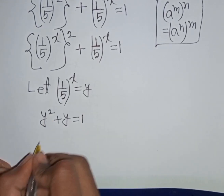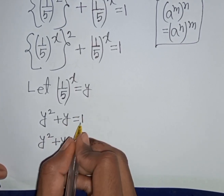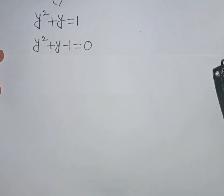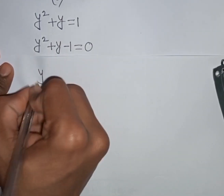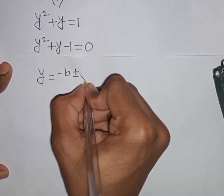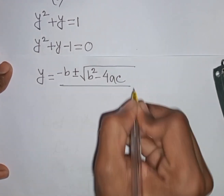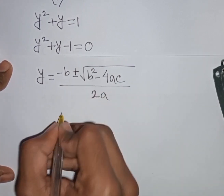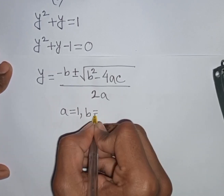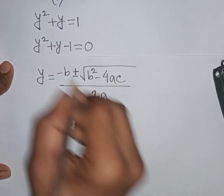Rearranging: y² + y - 1 = 0. Now we apply the quadratic formula: y = (-b ± √(b² - 4ac)) / 2a. Here a = 1, b = 1, and c = -1.